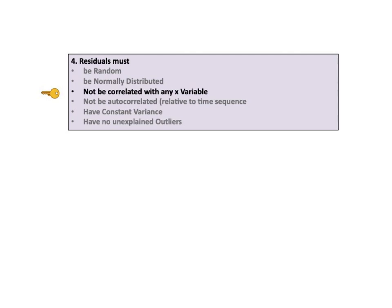Residuals must not be correlated with any X variable. Check this for individual X's with a scatter plot of the residuals against each of the X variables. There should be no pattern, or the pattern should approximate a horizontal band, which indicates that the residuals do not vary as X varies. Also, we must evaluate the correlation coefficient, the R's. The concept of correlation coefficient is explained in the second video.